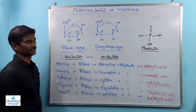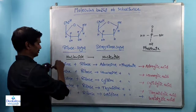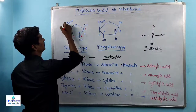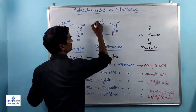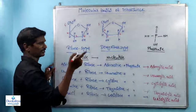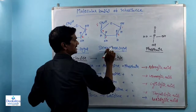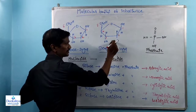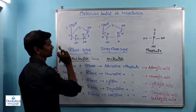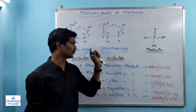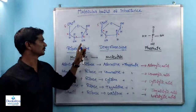After discussing nitrogen bases, the next topic is ribose sugar and deoxyribose sugar. Ribose sugar has 5 positions (carbon atoms). The basic difference between ribose and deoxyribose sugar: 'deoxy' means an oxygen atom is absent. At the second position, an oxygen atom is absent in deoxyribose — that is why it is called deoxyribose sugar. In ribose sugar, an oxygen atom is present at the second position.